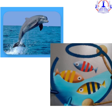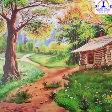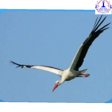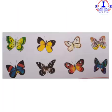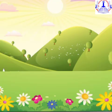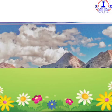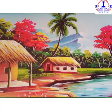Animals like pet dogs and cats are also a part of Nature. The fishes in the pond are also found in Nature. Trees, birds, butterflies, the green grass below and the blue sky above — all belong to Nature.